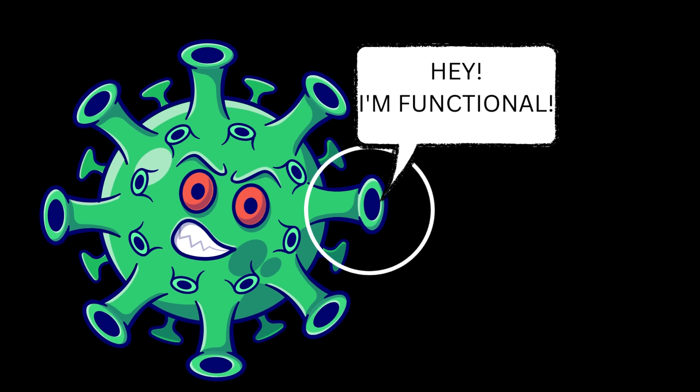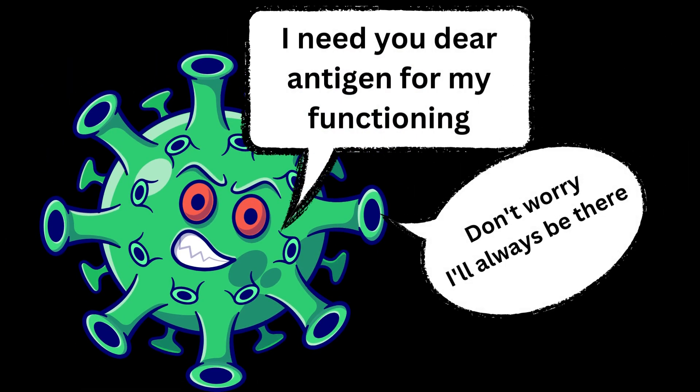To answer this question, antigens are not merely present on the pathogen's surface for their own destruction or for identification by the immune system. They are a functional unit present on the surface of these microbes, and these functional units or antigens help the pathogen to penetrate into cells for their mobility and several other vital functions.